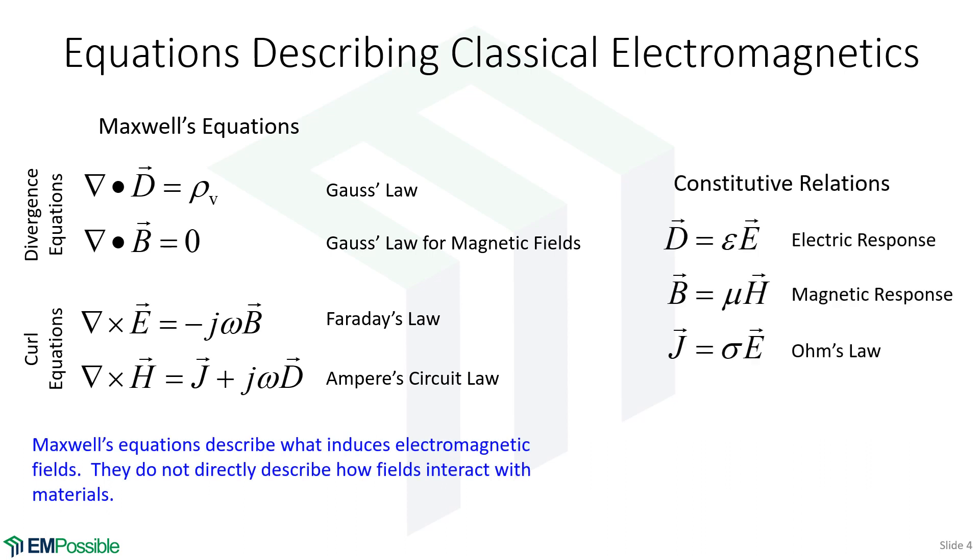So the materials come in through what we call the constitutive relations. And that's where we see our permittivity, our permeability, and the conductivity. So this is really describing the electric response of materials. And I might even say it's the electric fields that see the permittivity. The magnetic fields don't. They only see it indirectly through the coupling to the electric fields. And we have the magnetic response of material. Here's the permeability. And then we have what's essentially Ohm's law. Current density is conductivity times the electric field. And this is just the electromagnetic version of Ohm's law.